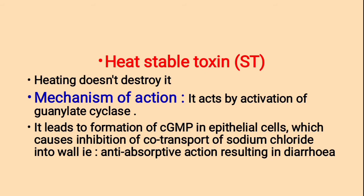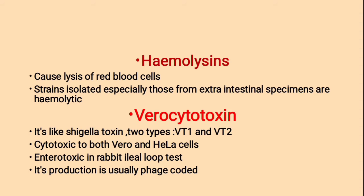Second toxin: Hemolysin. It causes lysis of red blood cells — the name hemolysin indicates lysis of red blood cells. The strains isolated especially from extra-intestinal specimens are hemolytic.